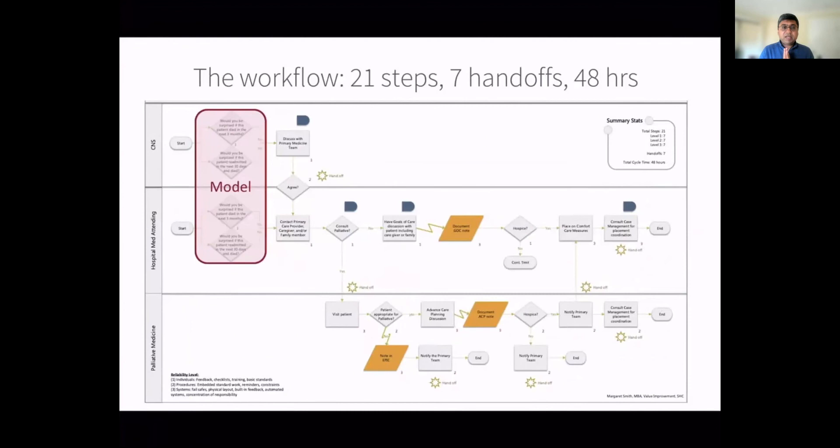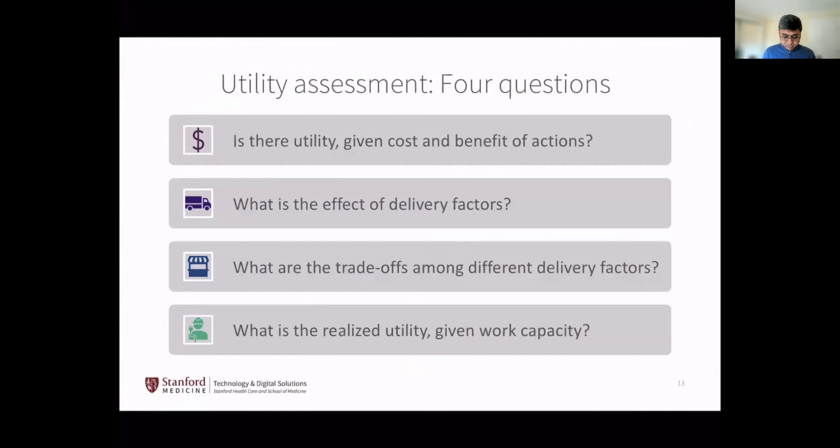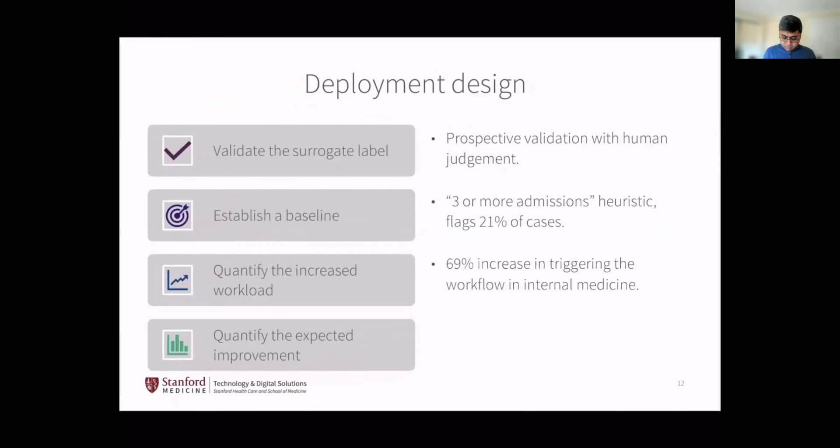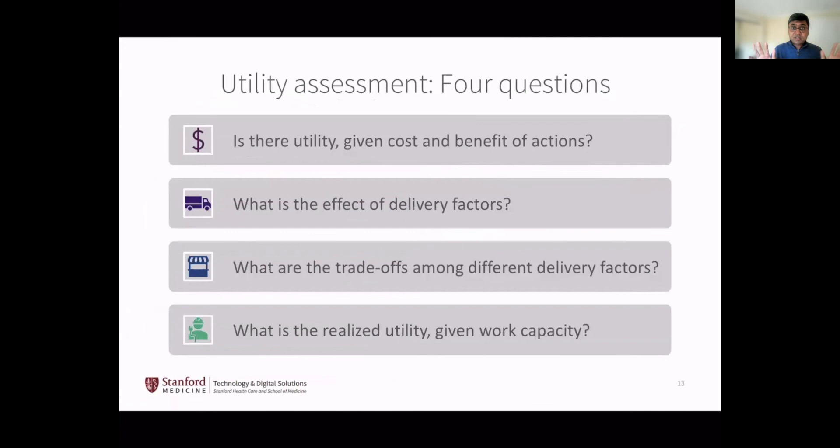The second thing for an honest assessment of benefit is to establish a baseline. Right now the model being used is a single variable - number of admissions. If greater than three, the person would be offered advanced care planning. It's a heuristic but it is a model, and it flags 21% of cases that would have truly benefited. Now we're going to plunk in our fancy neural net - actually a random forest. We need to know what's going to happen. We're going to increase workflow by 69%. Anytime you tell a doctor you're increasing their work by 70%, you need to justify why.